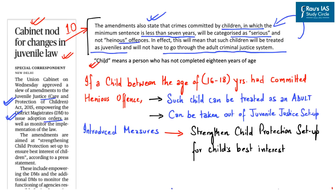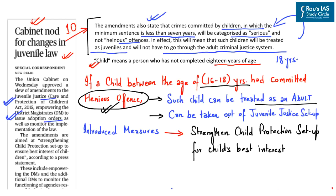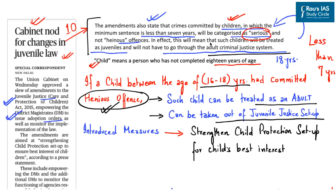Under the Act, a child is a person below 18 years of age. However, there was an exception: a child between 16 to 18 years who committed heinous offenses — for which punishment is more than 7 years — could be treated as an adult under the criminal justice system. The amendment now states that crimes with minimum sentences less than 7 years shall be categorized as serious offenses, allowing such children to be tried under the juvenile justice setup.